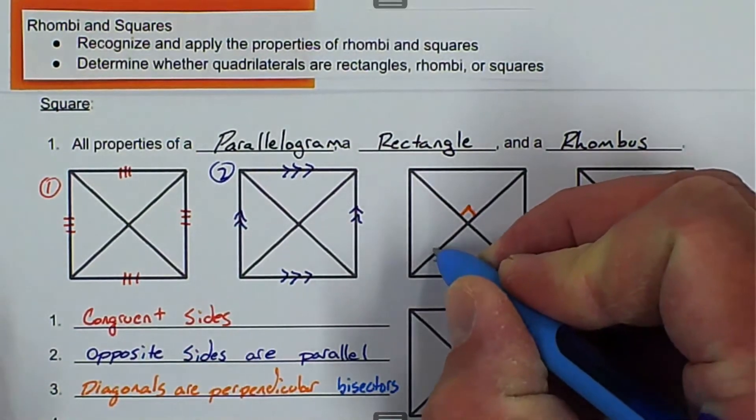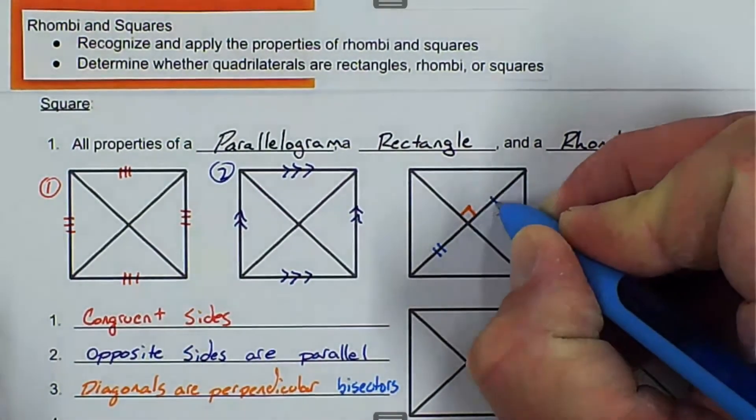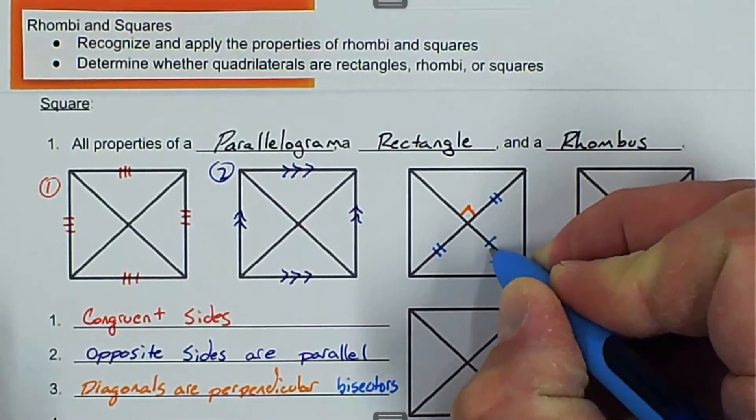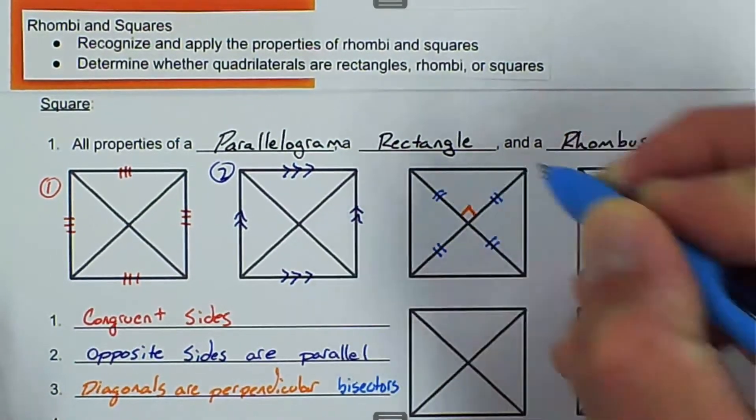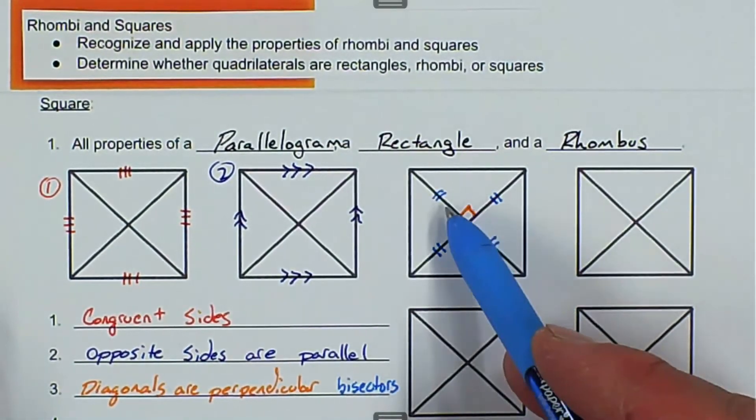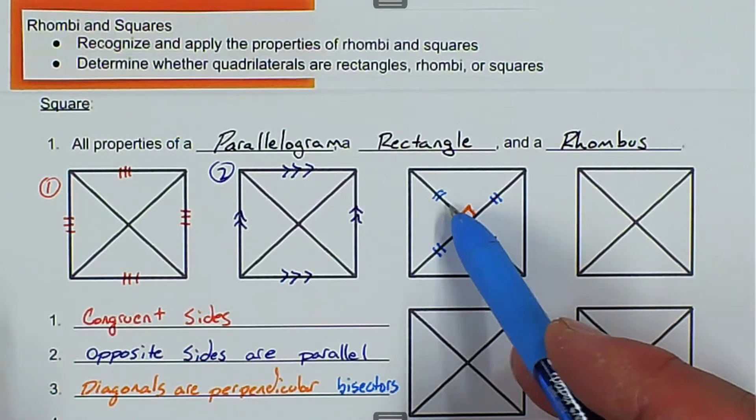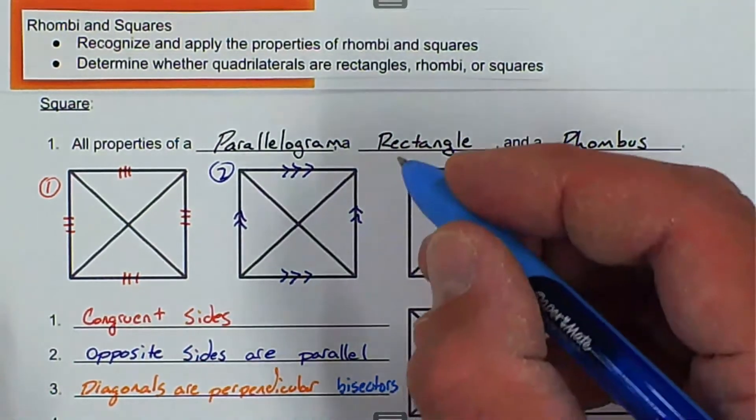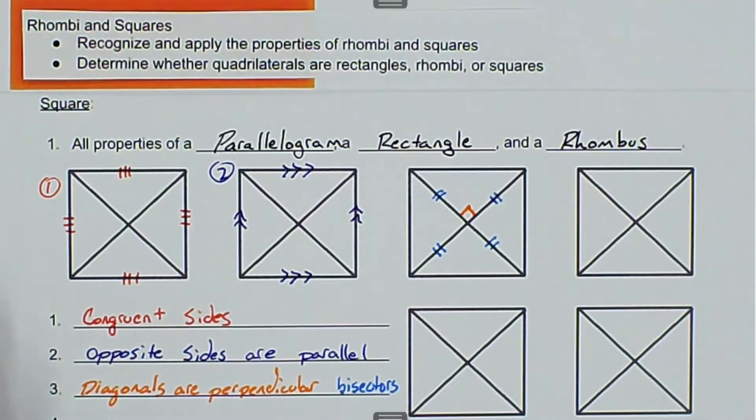That means that these are cut in half. In this case, not only are they cut in half, but they're also all congruent to each other. So these two are congruent, are congruent, are congruent. That's going to be for number three.